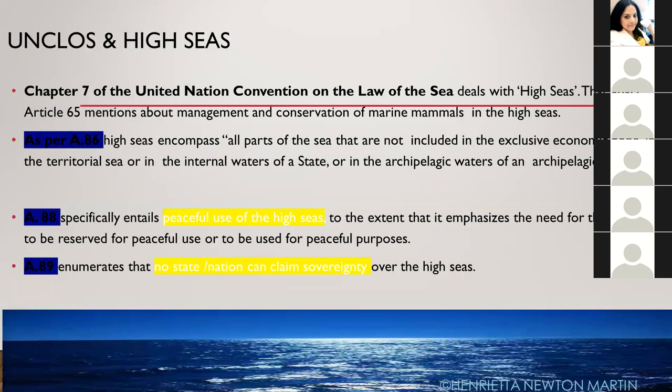Chapter Seven of the United Nation Convention on the Law of the Sea deals with high seas. Article 65 mentions management and conservation of marine mammals in the high seas, like whales. Article 86 states that high seas encompass all parts of the sea not included in the exclusive economic zone, and not included in the territorial sea or internal waters of a state.